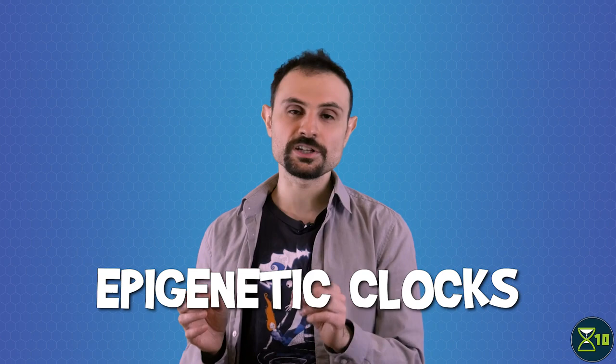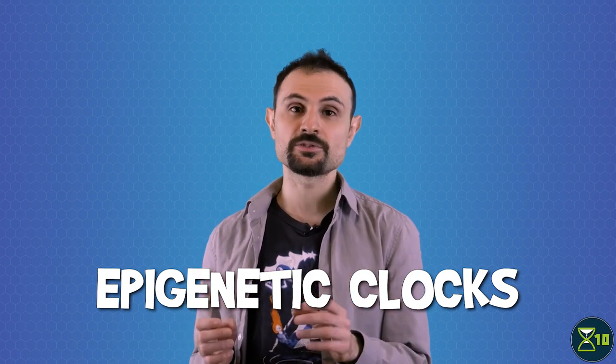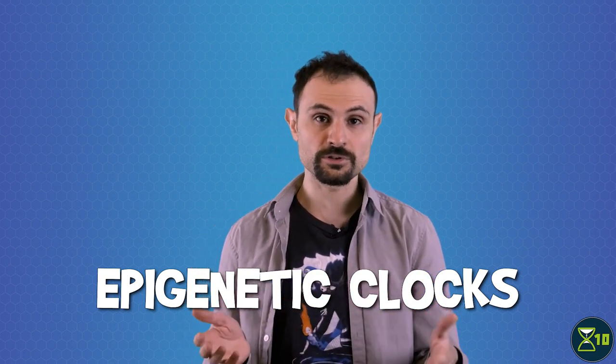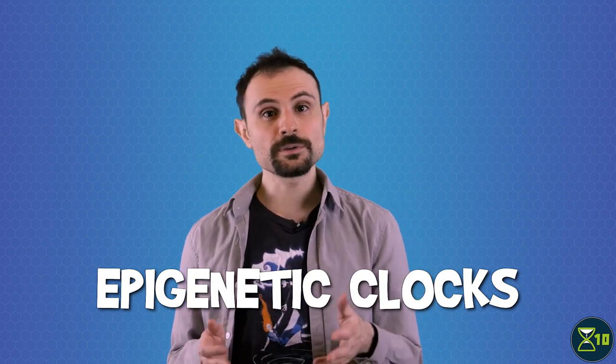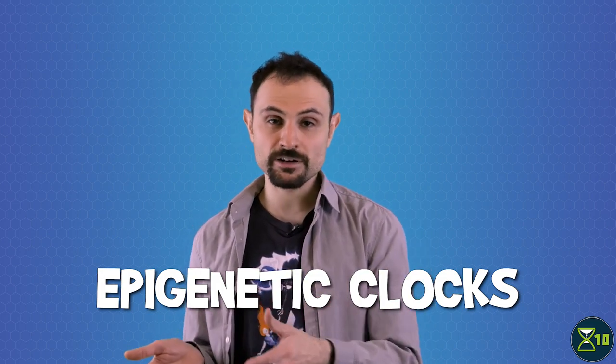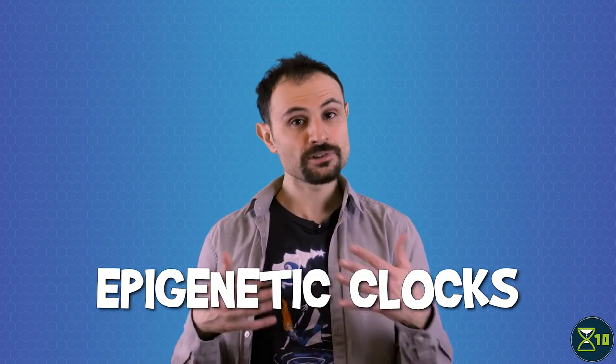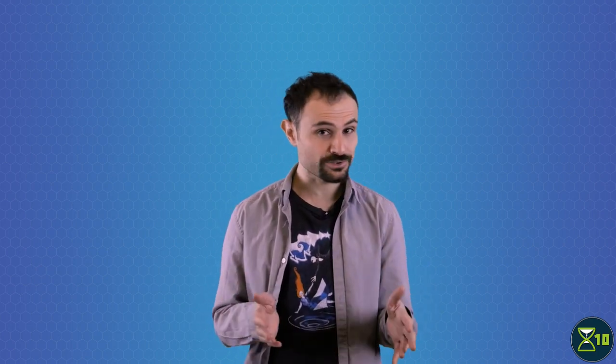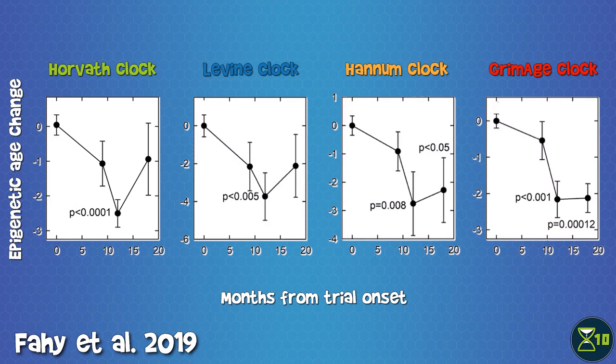Tests known as epigenetic clocks measure specific features of your DNA to estimate your biological age as opposed to your chronological age. People with a lower biological age than chronological age are aging more slowly and vice versa. The biological age of TRIMM patients was measured using four different epigenetic clocks at different points during the treatment and after its conclusion.